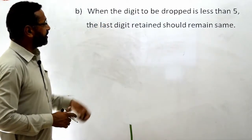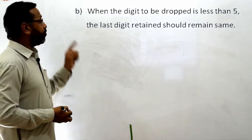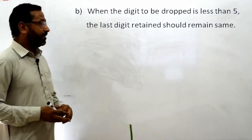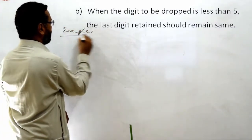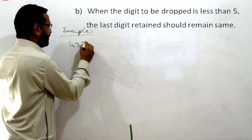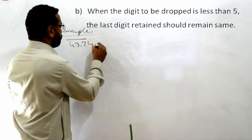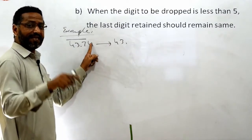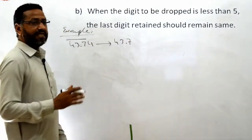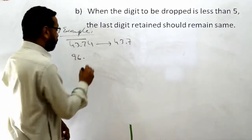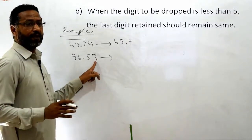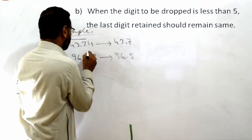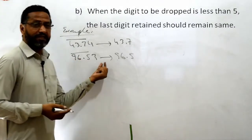Rule B: When the digit to be dropped is less than 5, then the last retained digit should remain the same. Example: 43.74 — اگر آپ 4 کو drop کریں تو 4 is less than 5، اس لیے 7 same رہے گا، یعنی 43.7. اسی طرح 96.53 — اگر 3 کو drop کرنا ہو تو 3 is less than 5، اس لیے 5 ہی رہے گا: 96.5.